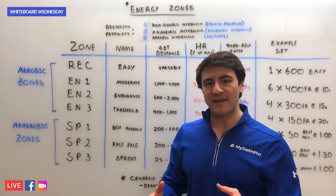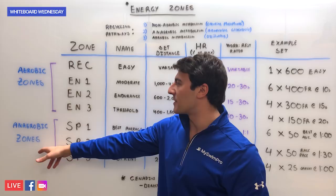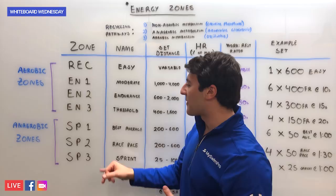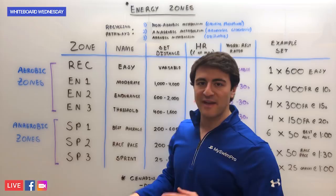There are seven main zones and we can split these seven zones into two distinct categories: our aerobic zones and our anaerobic zones. As you can see in the naming conventions, EN represents endurance — these are more on the endurance side of things, lower intensity for a longer duration of time. SP represents sprint for the anaerobic zone, producing lactic acid, higher intensity for a much shorter duration.